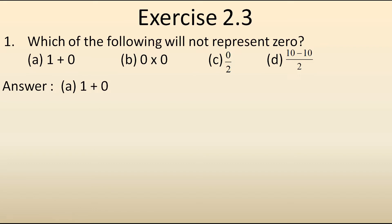The first one is 1 plus 0. As we know, 1 plus 0 is 1. Now let's check the second one, that is 0 into 0. As I have told in my previous video, if we multiply any number with 0, or 0 with 0, it will give you the answer as 0.